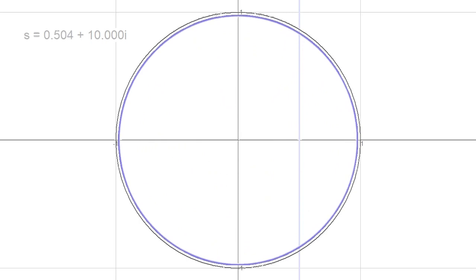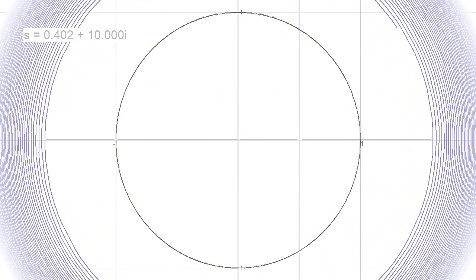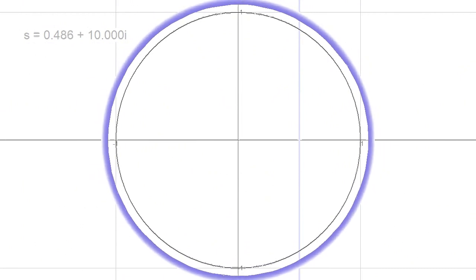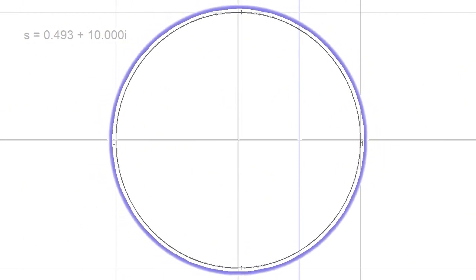Right at the inflection point, the plot transforms into a circular shape. This phenomenon is what we refer to as the zeta orbital invariance.